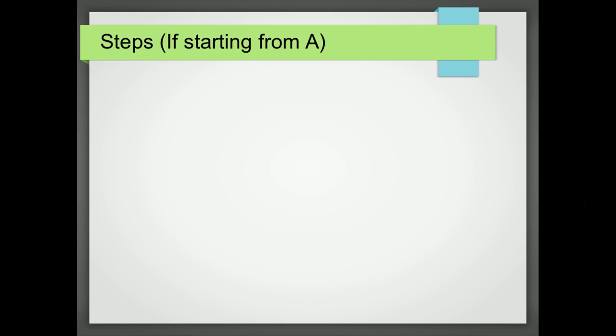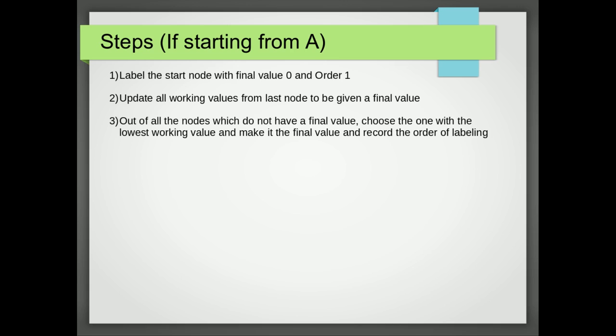So what are the steps that we go through to perform the shortest path algorithm? Well, the first thing we do is we label our initial node with a final value of 0, because the distance is 0, and give it order 1. We then update all the working values from the last node that was given the final value with their distances from A. And then out of all the nodes which don't have a final value, we now choose the one with the lowest working value. And we make that working value a final value, and then record its order of labeling.